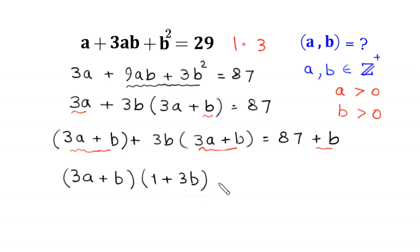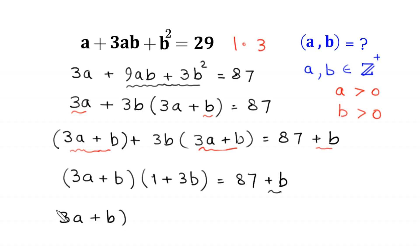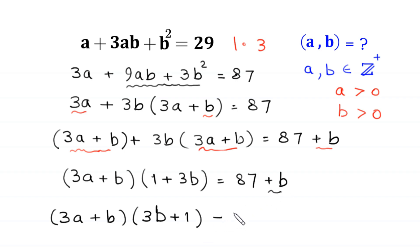We move the +b to the left-hand side, so it becomes (3a + b)(3b + 1) − b = 87.